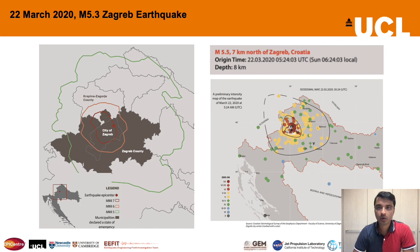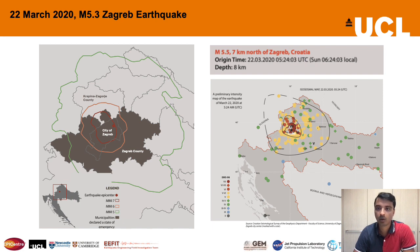On the 22nd of March last year, Zagreb was hit by the strongest earthquake since 1880, severely damaging public buildings and services in Zagreb and the surrounding areas. The earthquake resulted in one fatality, 26 injuries, and the displacement of hundreds of people. The earthquake took place in the context of the COVID-19 outbreak, while the country was still in a total lockdown, which made on-the-ground inspections by structural engineers much more difficult.